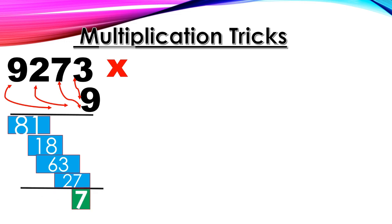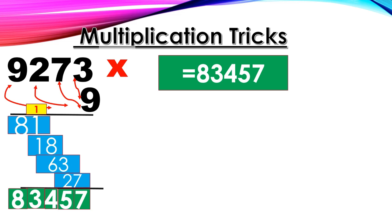Now add all. 7, 5, 14. Balance on the top, then add 3, then 8. The answer is 83,457.